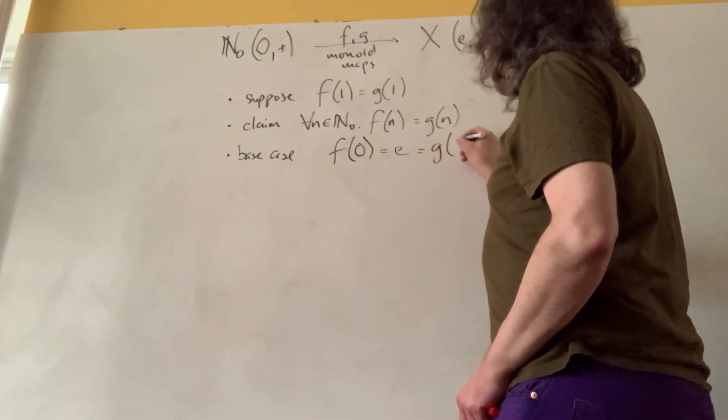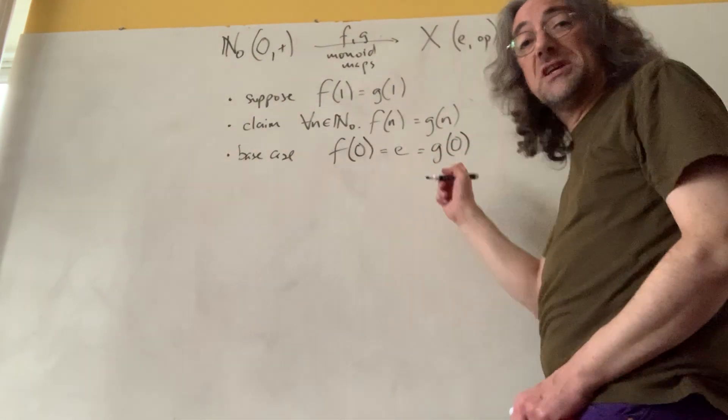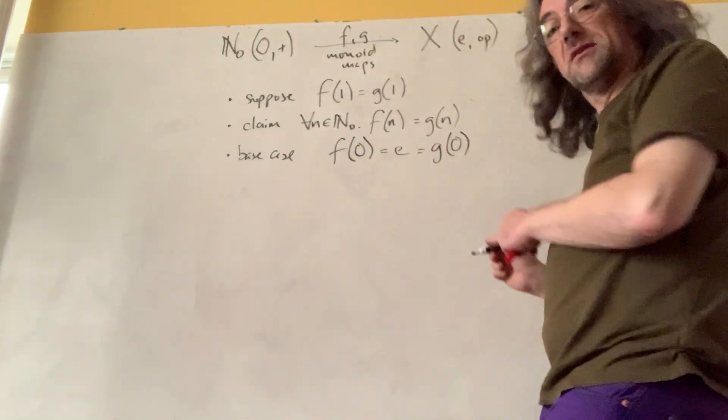but then g is also a monoid map, so g of 0 also has to be e. We're on our way.